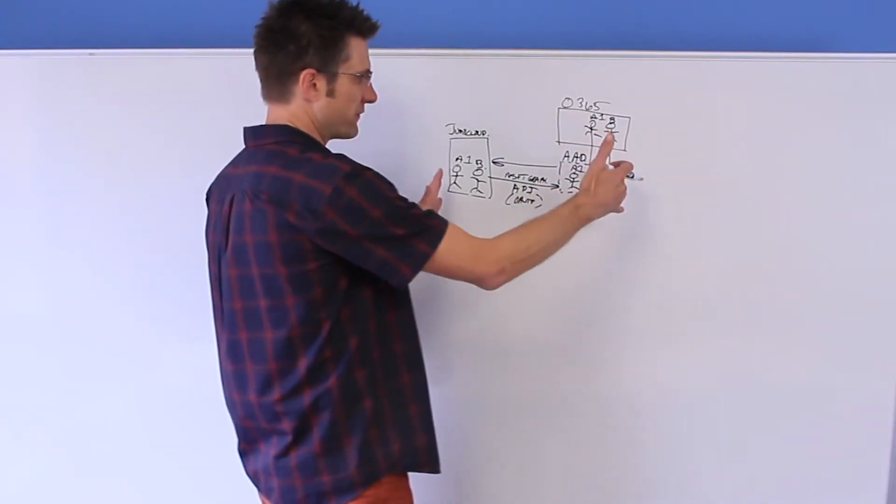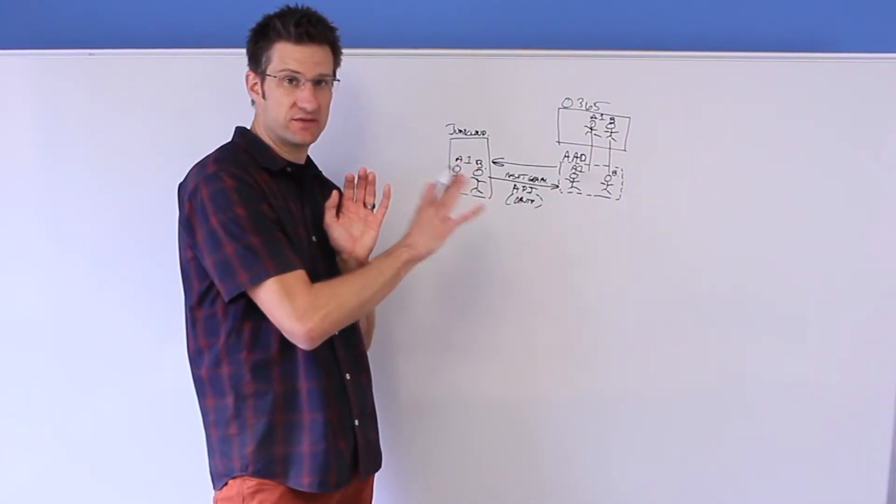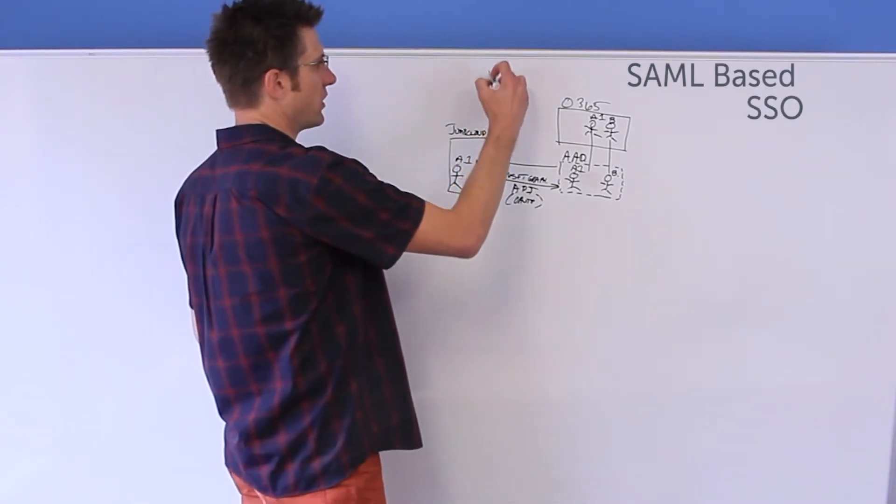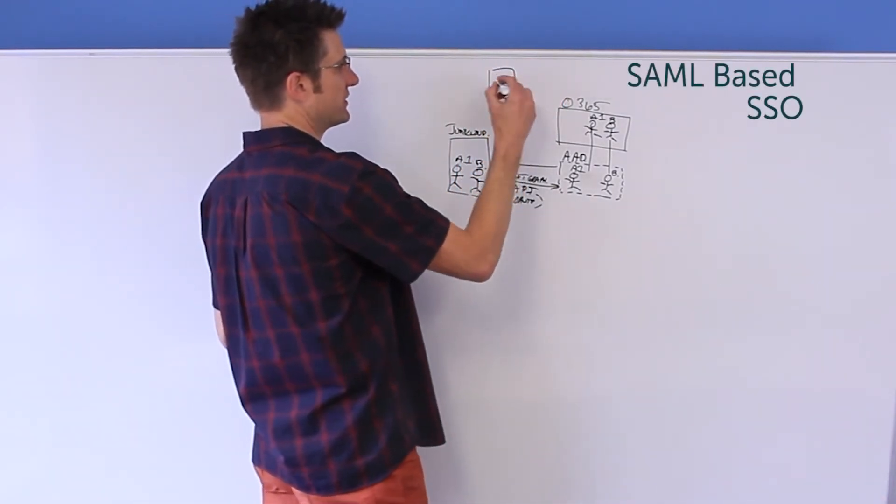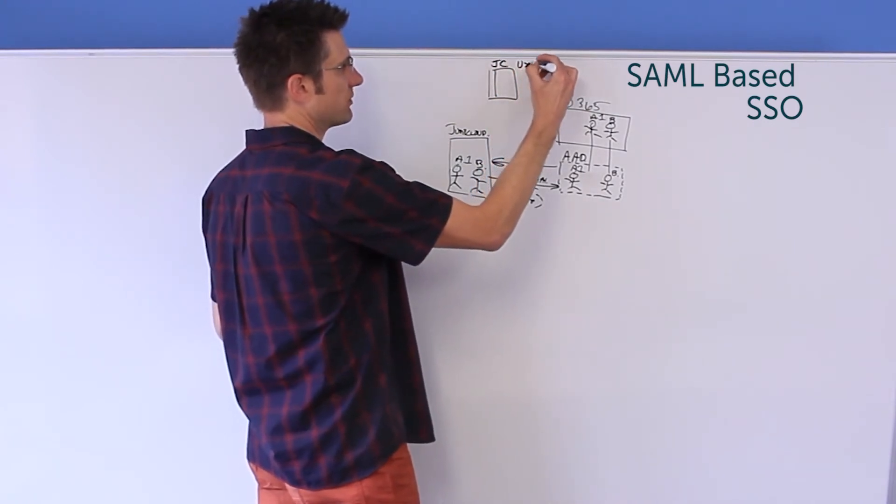So that's the first general endpoint. It's directory integrations at that deep level. The second is through SAML-based SSO. This box symbolizes the JC user portal.